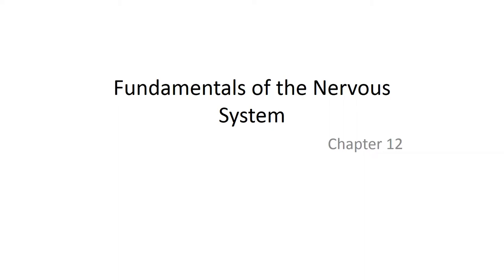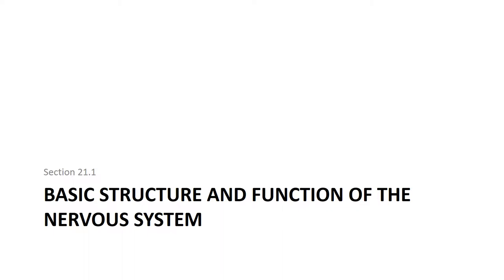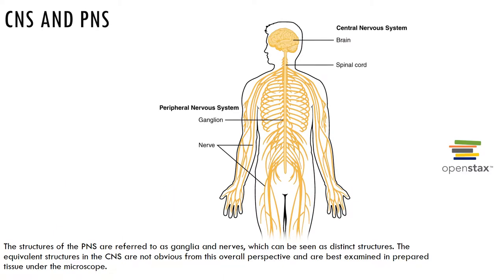We will examine some of the fundamentals of the nervous system by looking at nervous system and neural tissue. The divisions of the nervous system include the central nervous system, which is composed of the brain and spinal cord. This is considered to be the seat of all mental activity — it interprets sensory input and dictates motor responses based on past experiences, reflexes, and current conditions. The peripheral nervous system is composed of the cranial and spinal nerves, which are the communication lines between the CNS and the rest of the body.